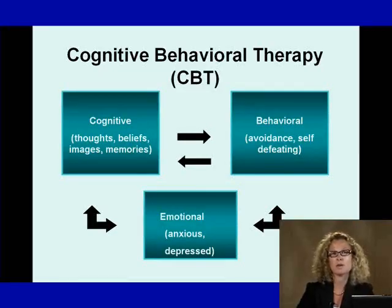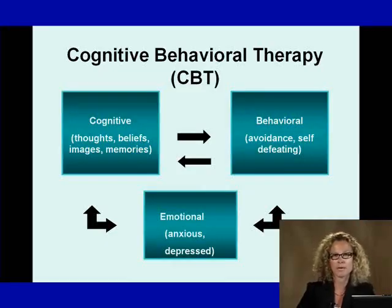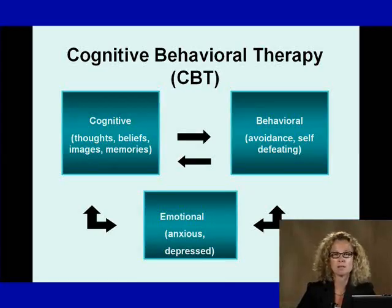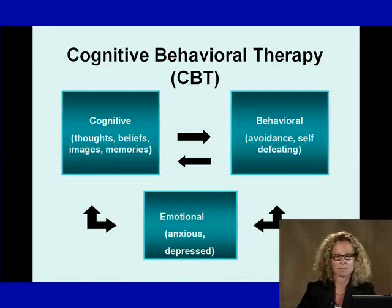Specifically, we are helping to identify patients' cognitions, which could include thoughts, beliefs, or memories. Their behaviors, which could include maladaptive behavior such as substance abuse, social isolation, or avoidance. And their emotions, such as depression, anxiety, sadness, or anger.